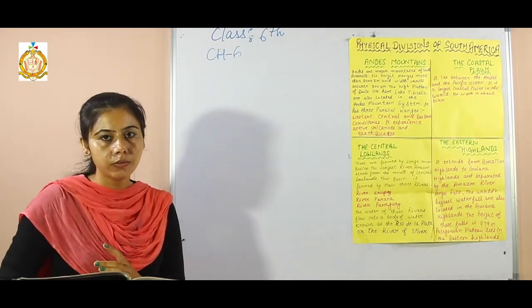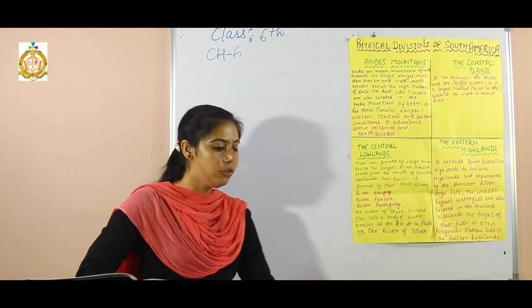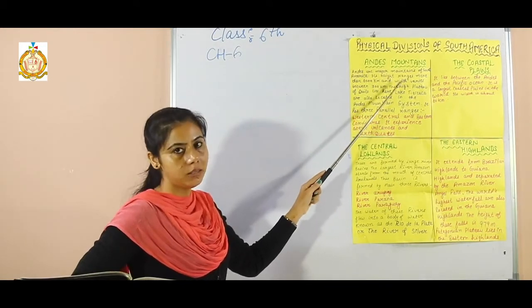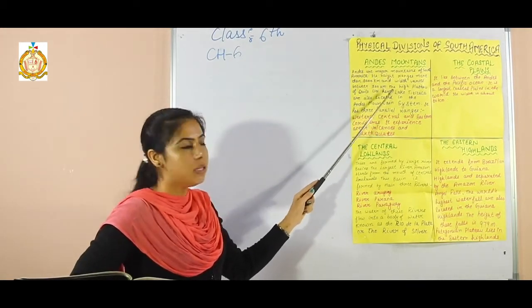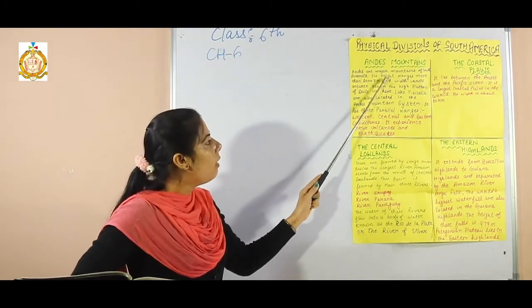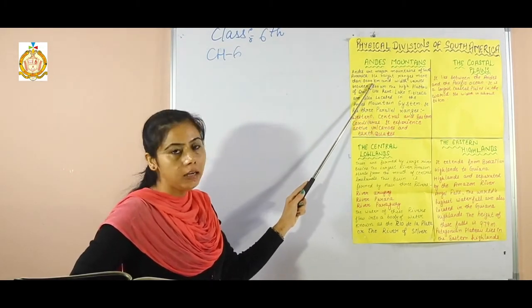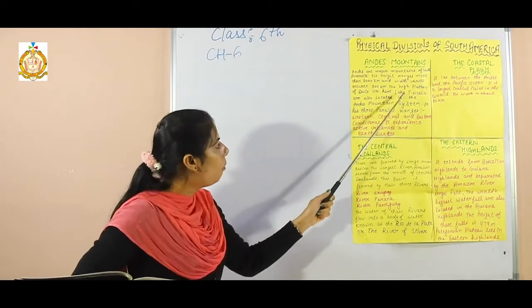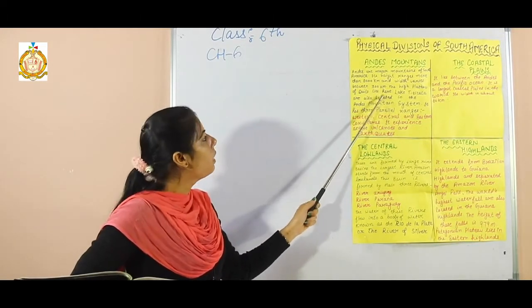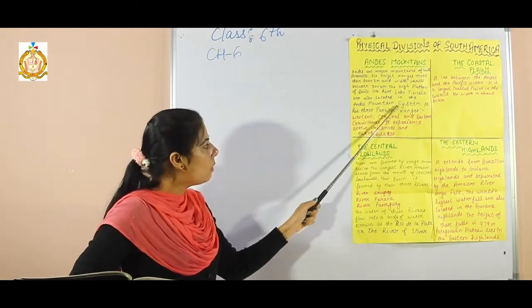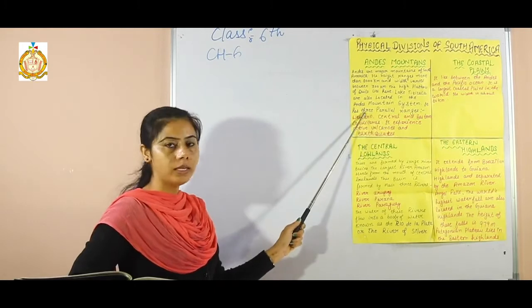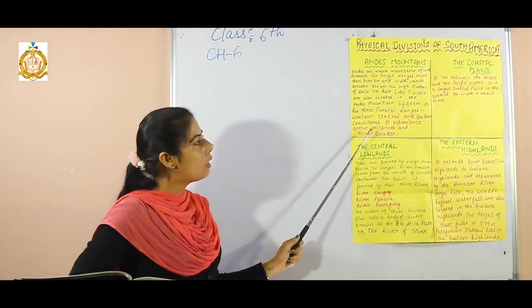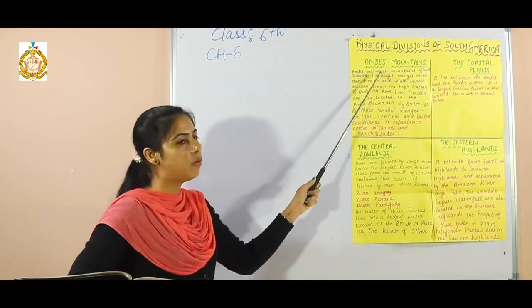On the basis of physical features, South America is divided into four categories. The first is the Andes Mountain System, the major mountain range of South America. Its height ranges to more than 8,000 kilometers and its width varies around 300 kilometers. The high plateau of the Altiplano lies here, and Lake Titicaca is also located in the Andes Mountain System. It has three parallel ranges — Western, Central, and Eastern Cordilleras — and experiences active volcanoes and earthquakes.